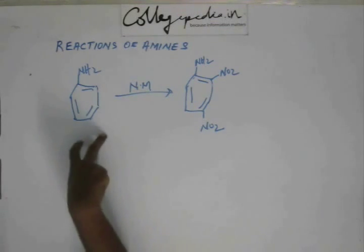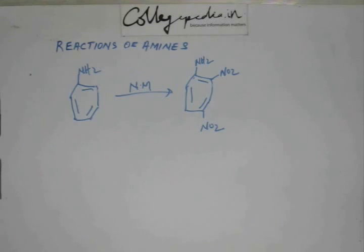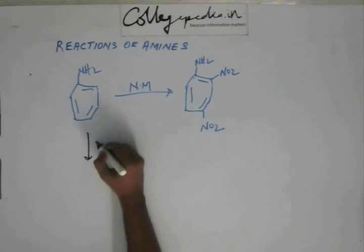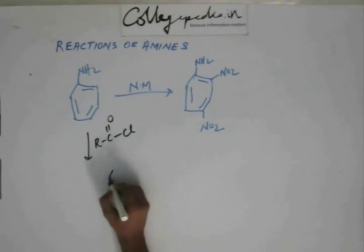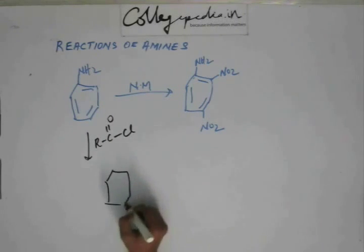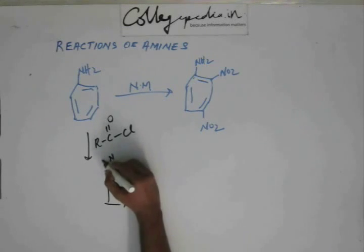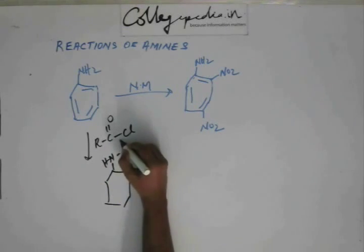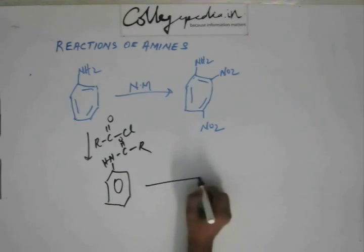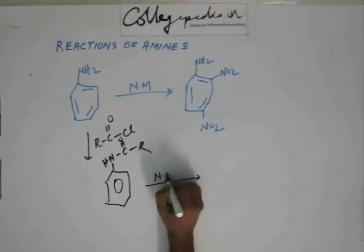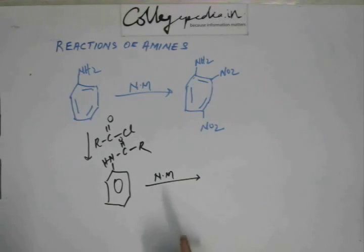If you make an amide out of this aniline by adding an acyl chloride or an acid anhydride, and now if you add nitrating mixture, if you add a nitrating mixture now...